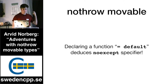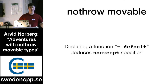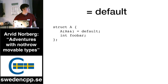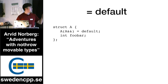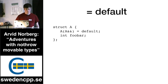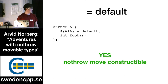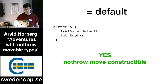I want to take a parenthesis on `= default` and how it behaves. Basically, if you declare a function as `= default`, it will deduce the `noexcept` specifier for that function, which is really good to keep in mind. For instance, `int` is nothrow move constructible obviously. So if we have this struct A and we say just `= default`, is it nothrow move constructible? Yes, because it's deduced from using `= default`.